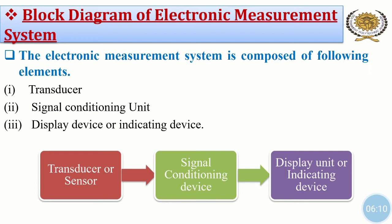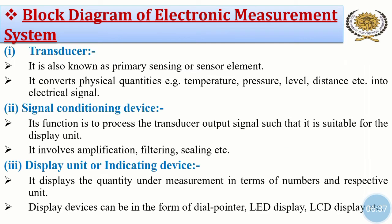Now let us move towards the block diagram of electronic measurement system. The electronic measurement system is composed of the following elements. First is transducer, also called sensor. Second is signal conditioning unit. Third is display device, also called indicating device. The transducer is also known as the primary sensing or sensor element. It converts physical quantities — for example, temperature, pressure, level, distance, etc. — into electrical signal.